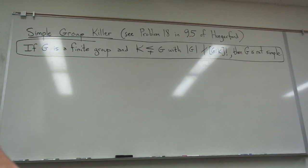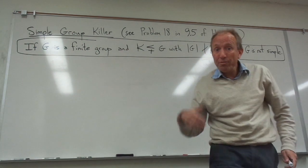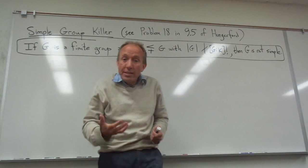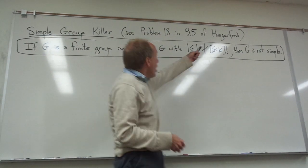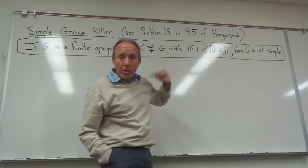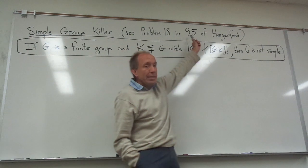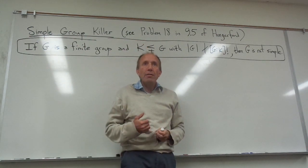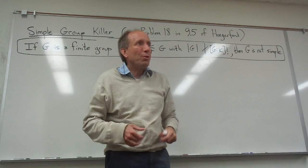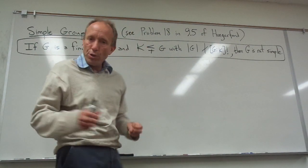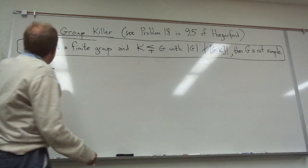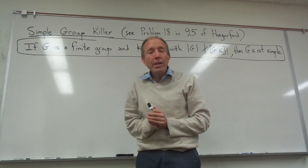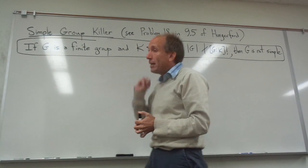Hi everybody. I wanted to step in here and give you guys a quick little video about a result that's really handy for disproving the existence of simple groups. This result is in Hungerford's textbook — it's actually an exercise, problem 18 in section 9.5. It doesn't have a very fancy theorem name associated with it, so I'm going to call it the simple group killer. It means that we're going to disprove the existence of simple groups of certain sizes.